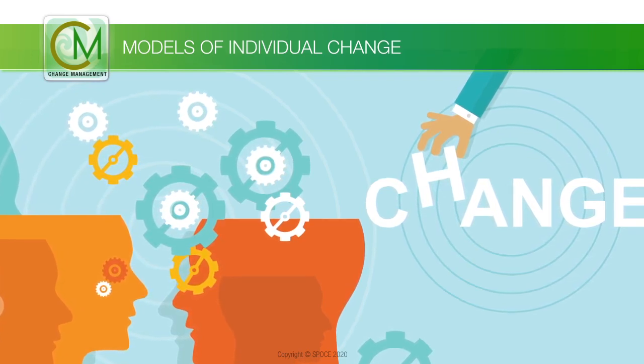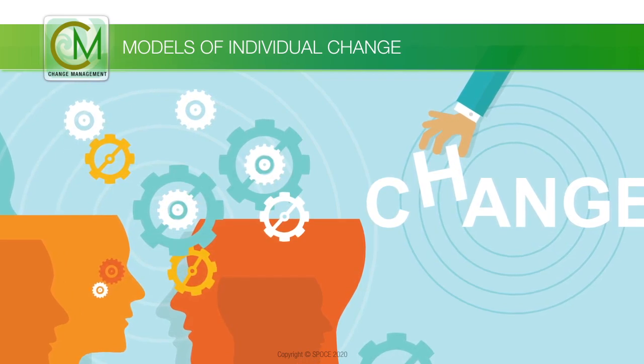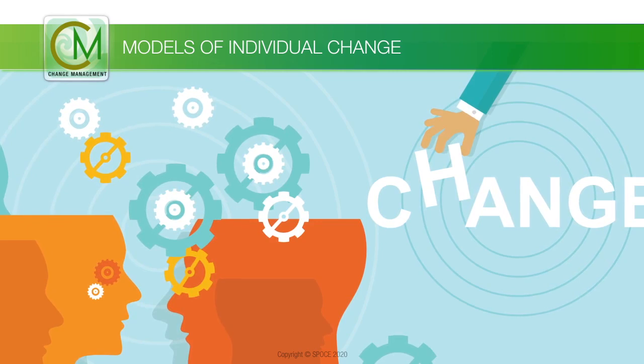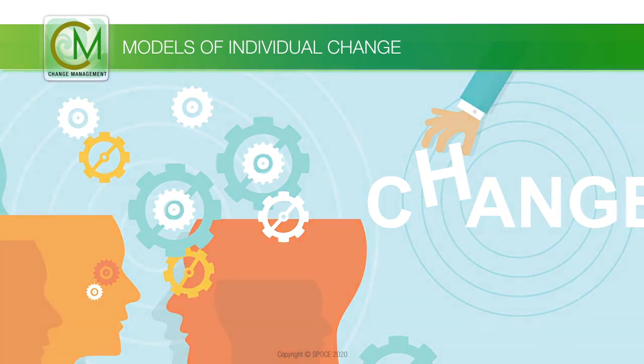The curve shows how the personal performance, energy, and mood characteristically vary through the normal process of human change. The curve begins with shock and denial.